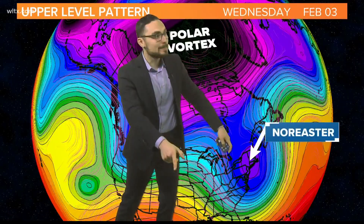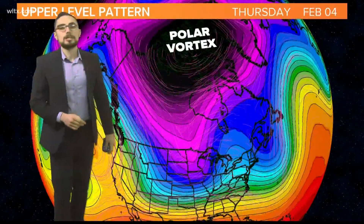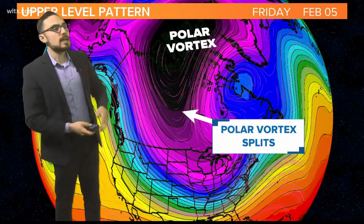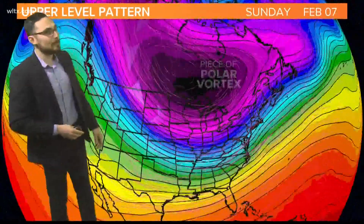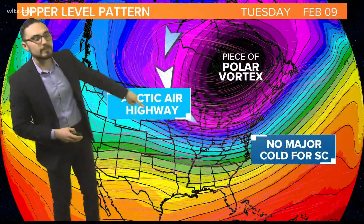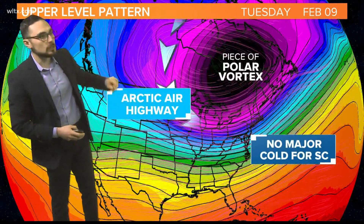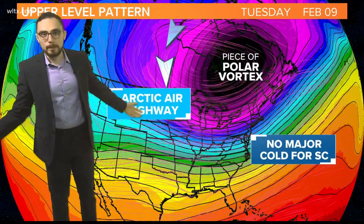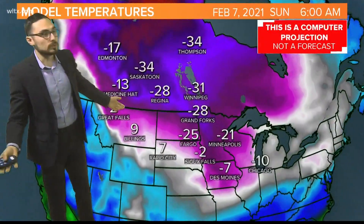Unfortunately, the nor'easter that's been the topic of conversation this week is pushing north, and that's going to help disrupt the polar vortex. It splits, and now you have a piece of the polar vortex developing in eastern Canada, sending a wave of Arctic air down into the Midwest. The northern plains — basically the gates are open and cold air gets to move in, and this air is seriously cold.